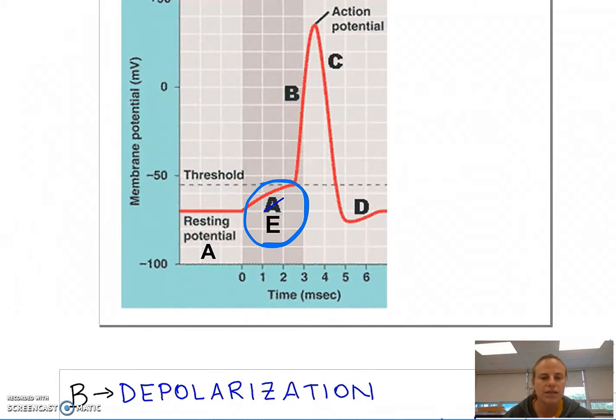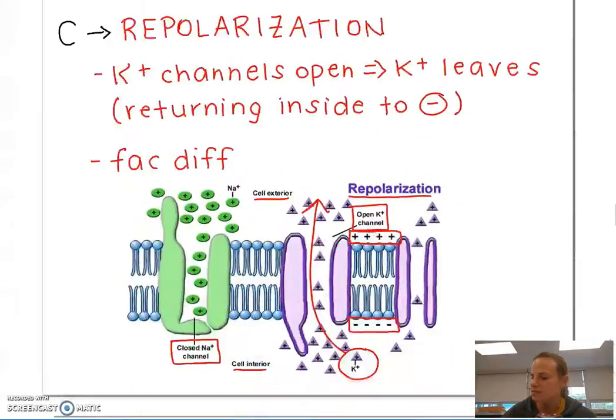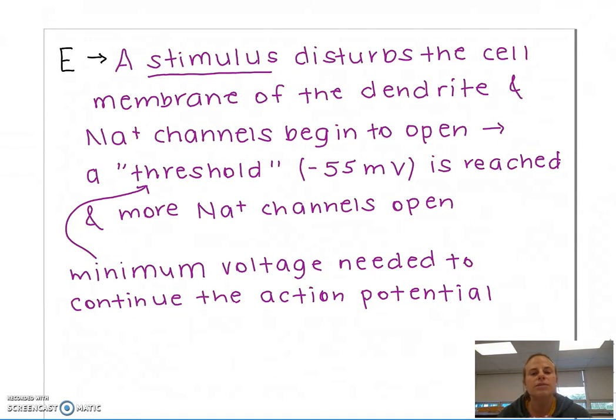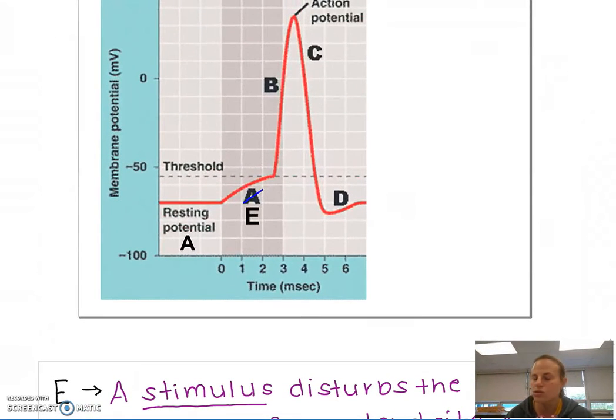Now let's look at section E. What do you think section E is? Section E is some sort of stimulus that's going to cause the cell to be disturbed. So the stimulus disturbs the cell membrane of the dendrite, and now my sodium channels begin to open. A threshold is released. The threshold is the minimum voltage needed to continue the action potential. That threshold is negative 55 millivolts. Once that threshold is reached, more sodium ions begin to pass through more sodium ion channels that start to open. I have to reach that threshold, though, in order for the action potential to continue traveling down the axon. If I don't reach this threshold, nothing happens. There is just no response.